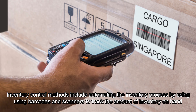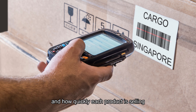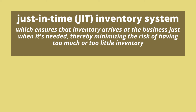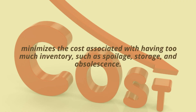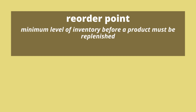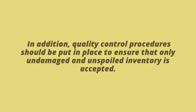Inventory control methods include automating the inventory process by using barcodes and scanners to track the amount of inventory on hand and how quickly each product is selling, as well as just-in-time inventory systems that ensure inventory arrives just when it's needed. A just-in-time system minimizes the costs associated with having too much inventory, such as spoilage, storage, and obsolescence. A company should also establish a reorder point for each of its products, which is the minimum level of inventory before a product must be replenished.